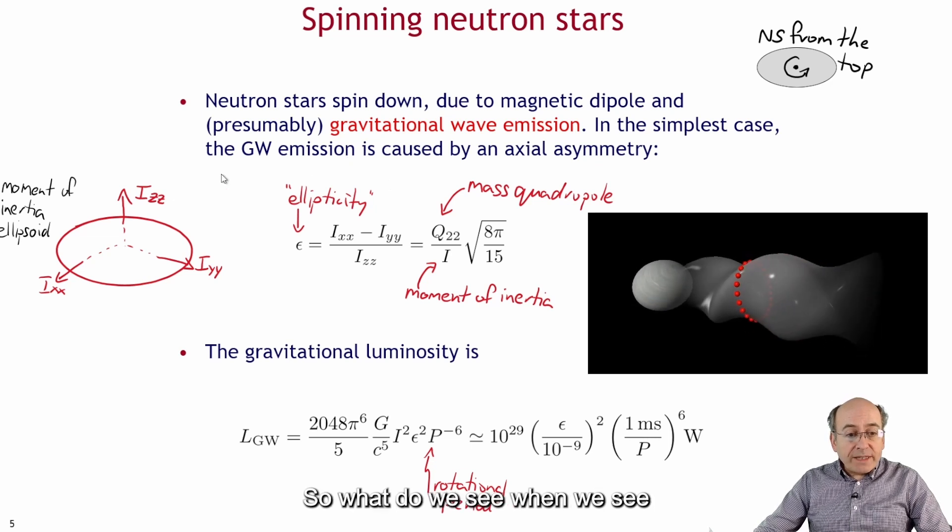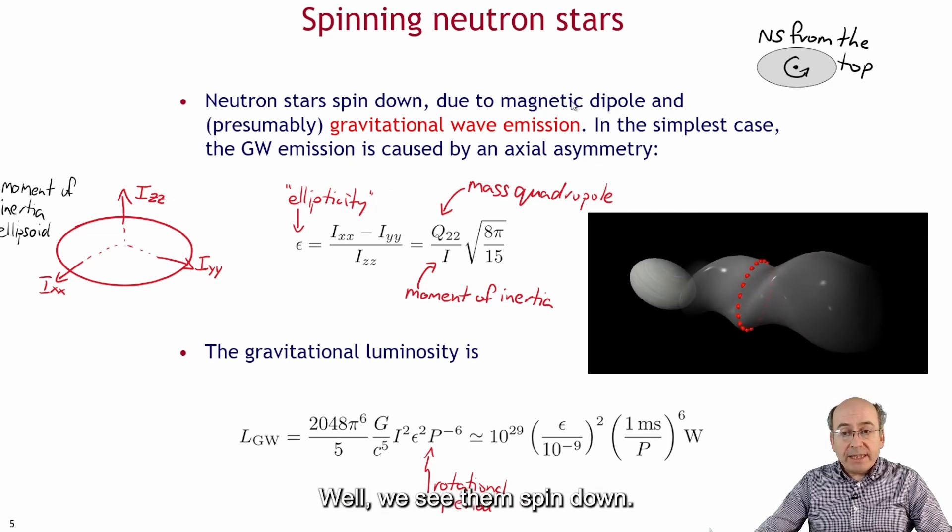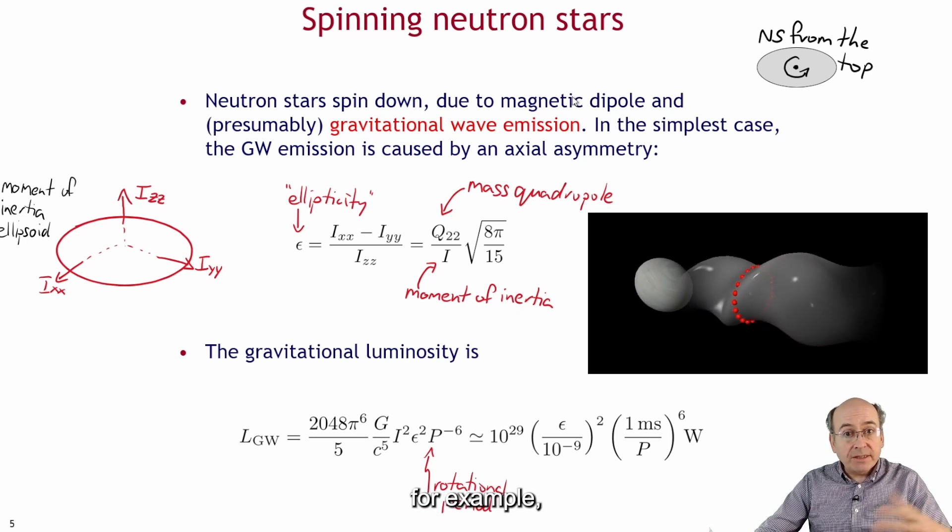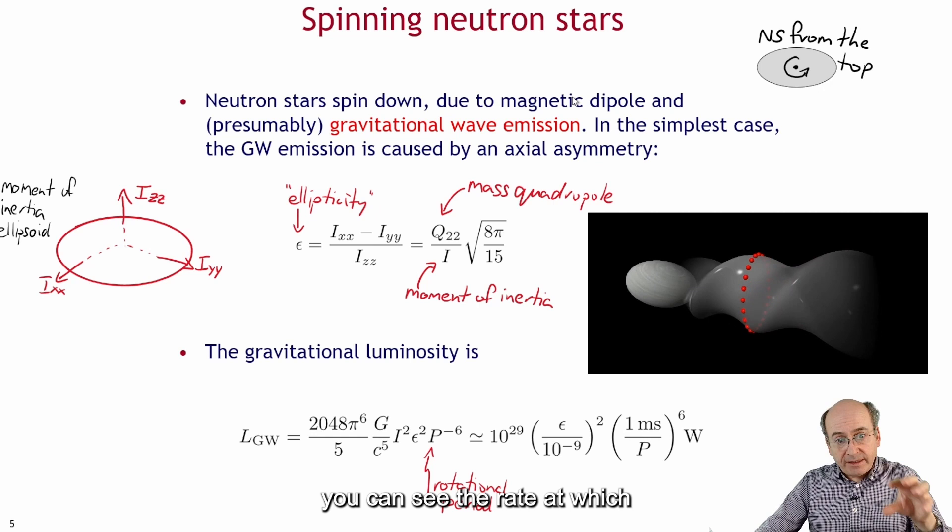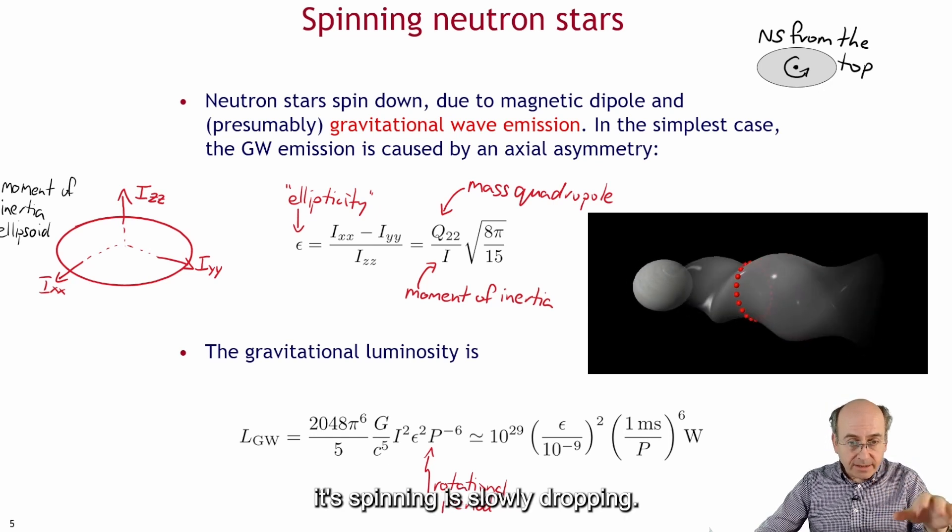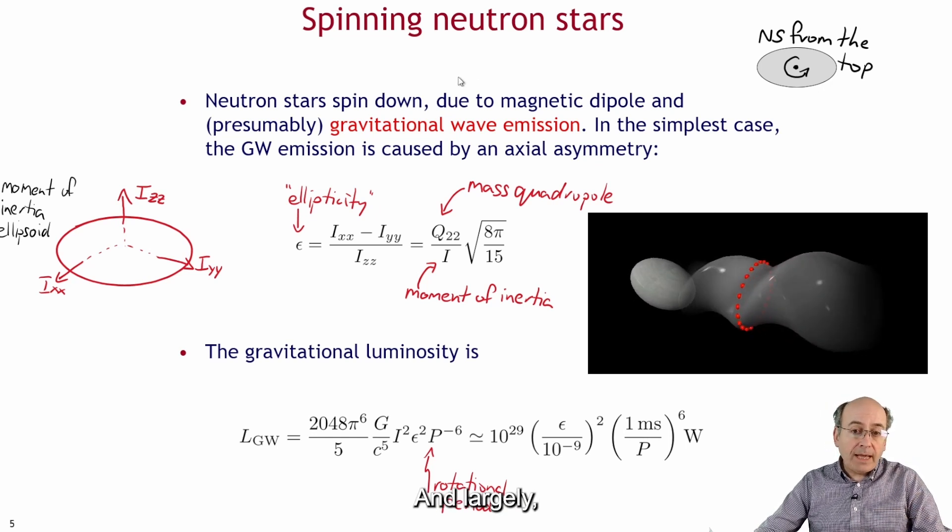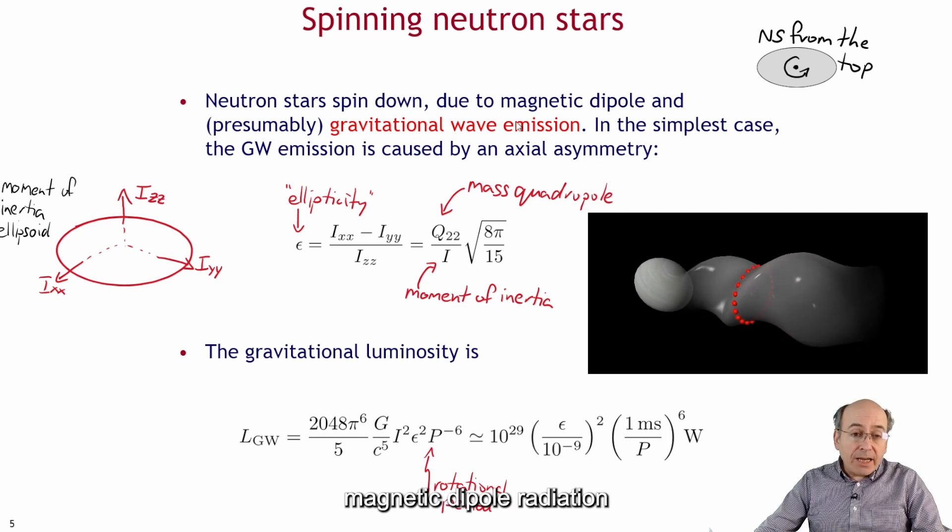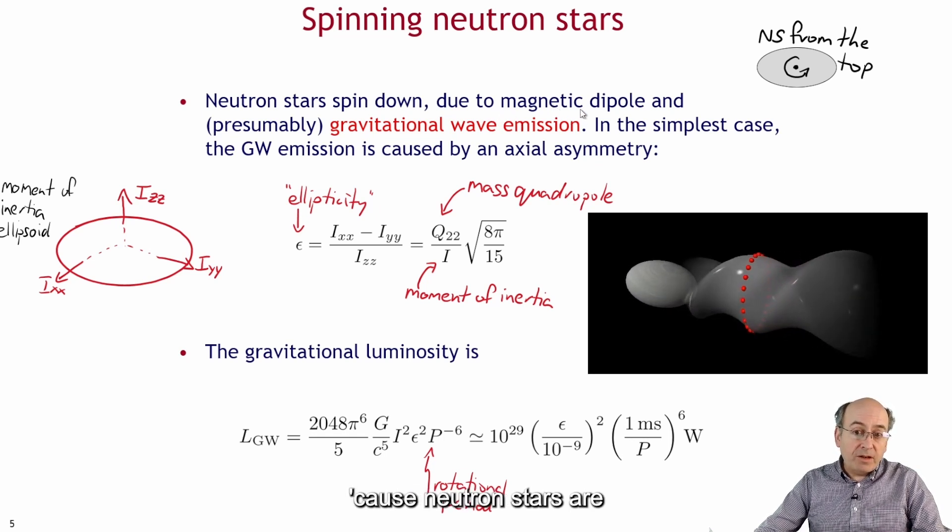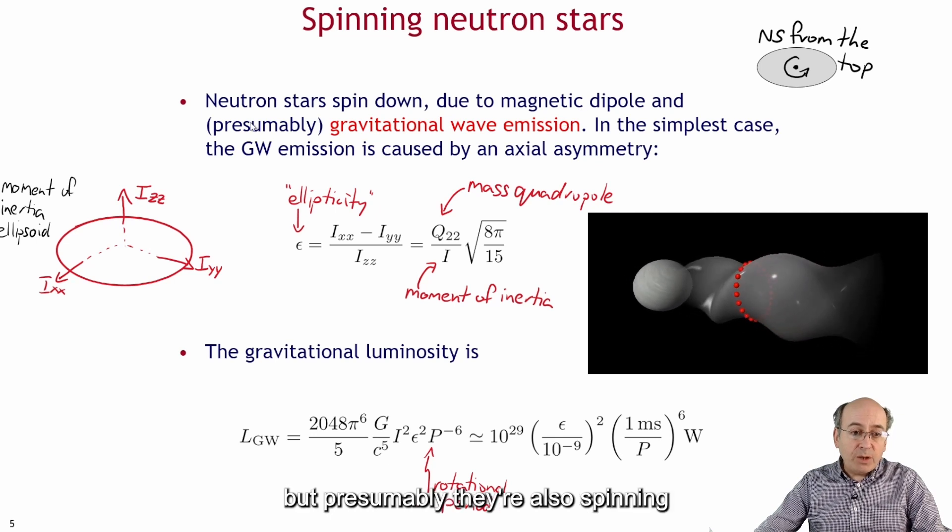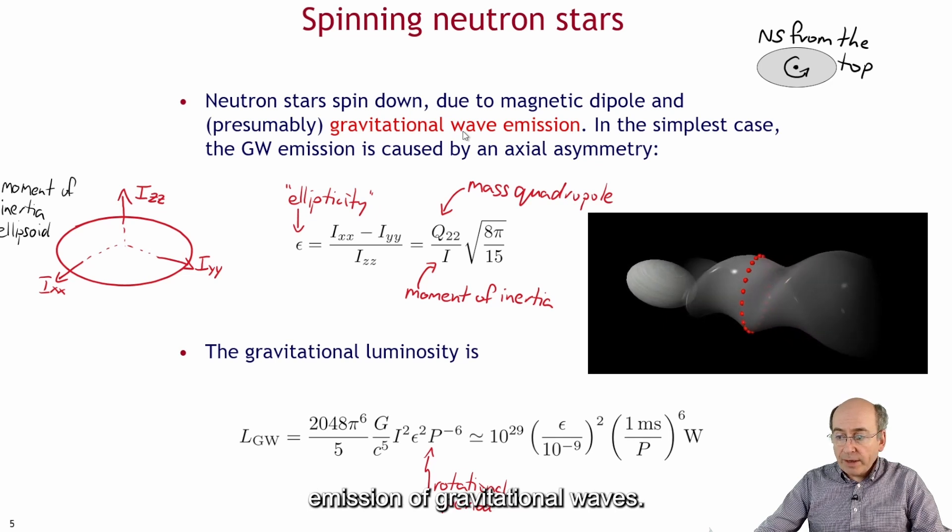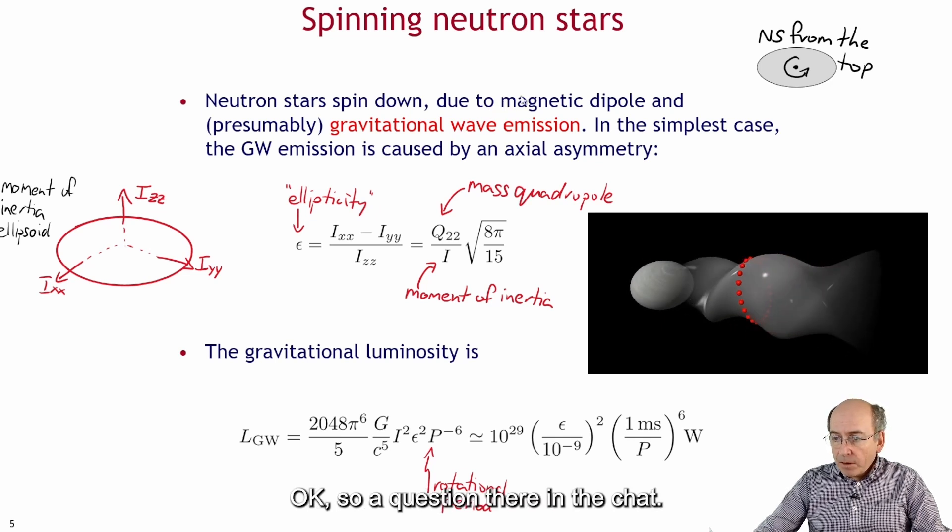So what do we see when we see these neutron stars? Well we see them spin down. When you look at a pulsar for example you can see the rate at which it's spinning is slowly dropping and largely that's due to the emission of magnetic dipole radiation because neutron stars are very highly magnetized but presumably they're also spinning down to some extent through the emission of gravitational waves.